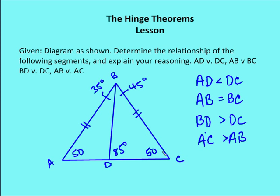In figuring out the relationship of AD and DC, we go back to the hinge theorem, which says that if two sides of a triangle are congruent — AB and DB are congruent to BC and DB, with DB congruent to itself — and the included angle in one is larger than the other, then the side opposite the larger angle is greater. So DC is going to be greater than AD.